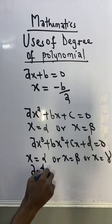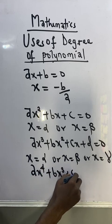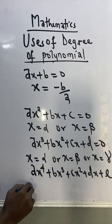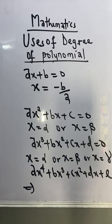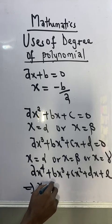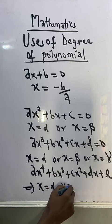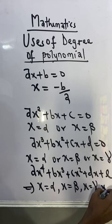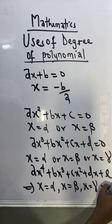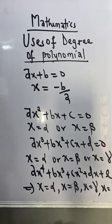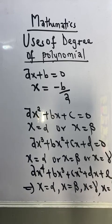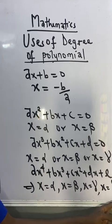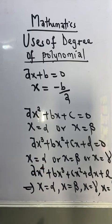If it is a polynomial of degree four, like ax raised to four plus bx raised to three plus cx raised to two plus dx plus e, solving this equation is going to produce a solution of this form: x equal to alpha, or x equal to beta, or x equal to gamma, or x equal to delta. You can see that this produces four roots because we have degree four — four answers because of degree four.